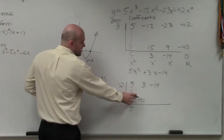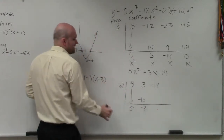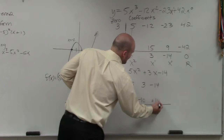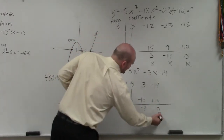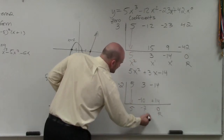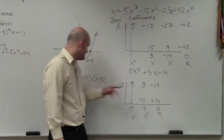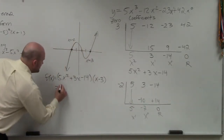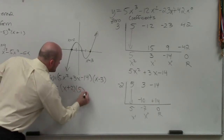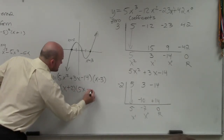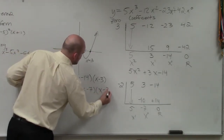So 5 times negative 2 is negative 10. 3 plus negative 10 is negative 7. Negative 7 times negative 2 is positive 14, giving 0. So in reality, this gives you remainder, x to the 0, x to the first. So in reality, ladies and gentlemen, this can be factored down into x plus 2 times 5x minus 7 times x minus 3.